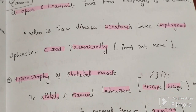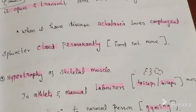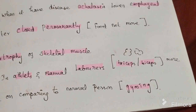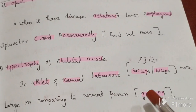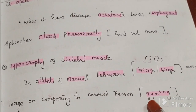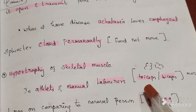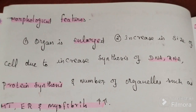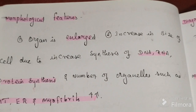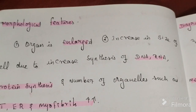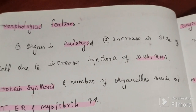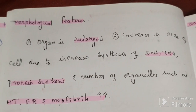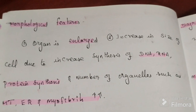Hypertrophy of skeletal muscles is seen in athletes or manual laborers. They develop enlarged triceps and biceps compared to normal individuals — those who go to the gym develop these muscles because of hypertrophy. Morphological features: the organ is enlarged, with an increase in cell size due to increased synthesis of DNA, RNA, proteins, and increased number of organelles such as mitochondria, endoplasmic reticulum, and myofibrils.